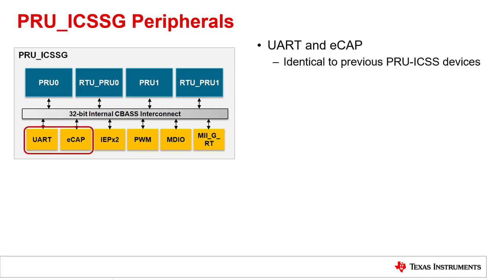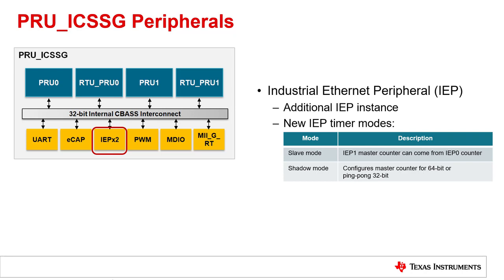The UART and ECAP peripherals on PRU ICSSG are identical to the previous PRU ICSS. The UART can run up to 12 megabits per second, and the ECAP can operate in either an enhanced capture or auxiliary PWM mode. The Industrial Ethernet Peripheral or IEP supports the same basic functionalities as the PRU ICSS, including a timer with compare and capture capabilities, sync signals, watchdog timers, and digital IOs. Whereas the PRU ICSS only has one IEP instance, the PRU ICSSG adds a second IEP instance.